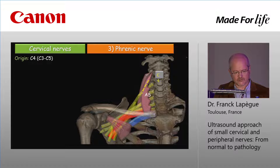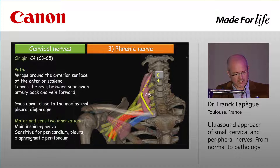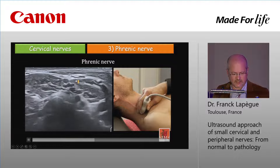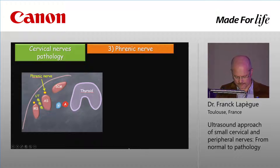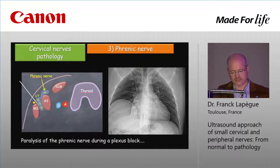Now the phrenic nerve. It originates from C4, sometimes C3 and C5. It wraps around the anterior surface of the anterior scalene and leaves the neck between the subclavian artery behind and the vein in front. Then it goes down close to the mediastinal pleura and reaches the diaphragm. It provides motor innervation for the inspiratory muscles and sensitive innervation for the pericardial pleura and diaphragmatic peritoneum. In this demonstration, the interscalene space is here, the nerve emerges here and wraps around the anterior scalene. We can follow it quite far. During plexus block, if the anesthesia goes there, you can observe diaphragmatic paralysis.